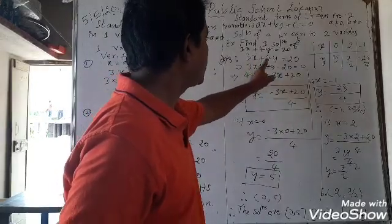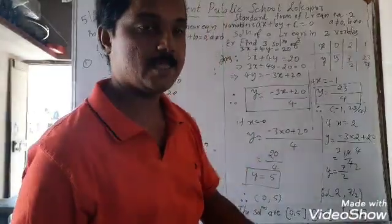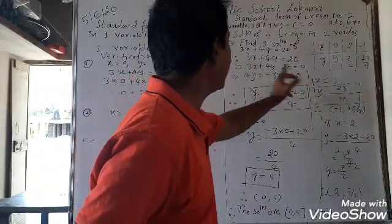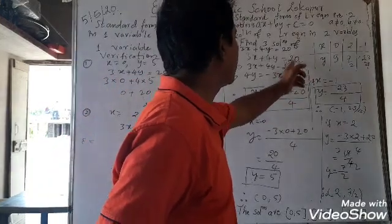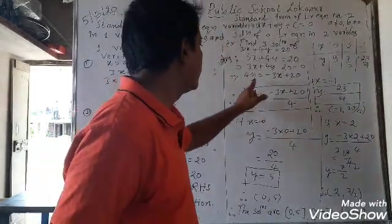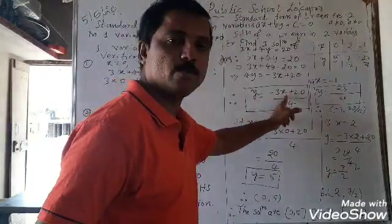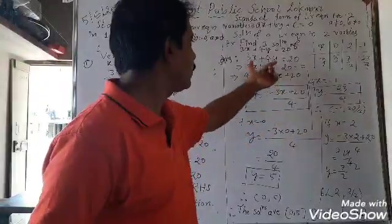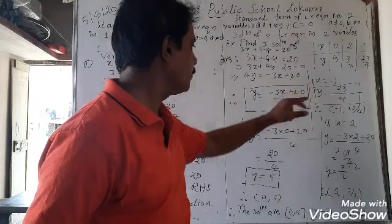Here, 3x plus 4y is equal to 20 is the given equation. First, you equate it to y. Sending plus 3x to this side gives minus 3x, so minus 3x plus 20 is equal to 4y. Dividing by 4, y is equal to minus 3x plus 20 divided by 4. This is how we equate the given equation for y. After equating to y, make a tabular column for x and y.